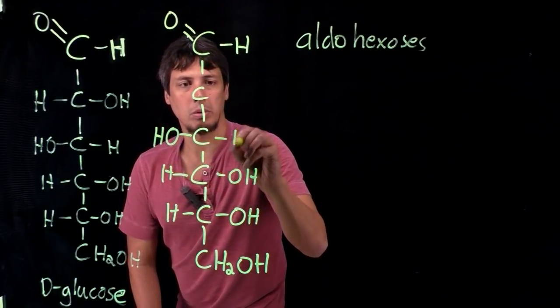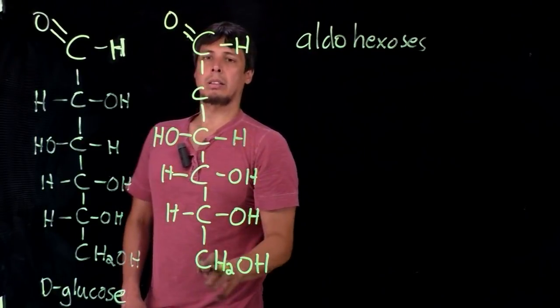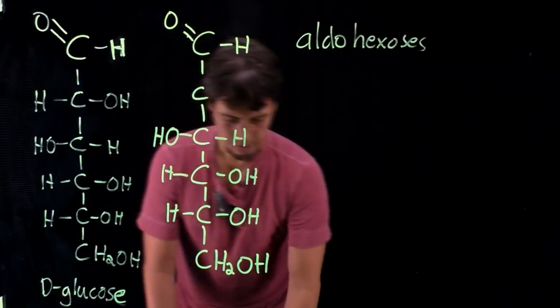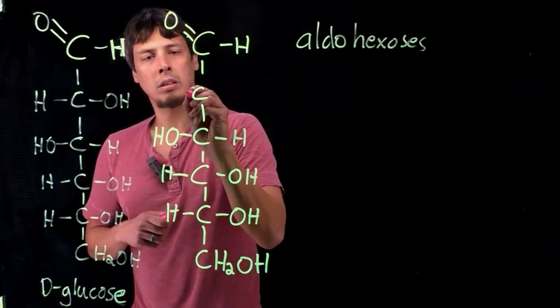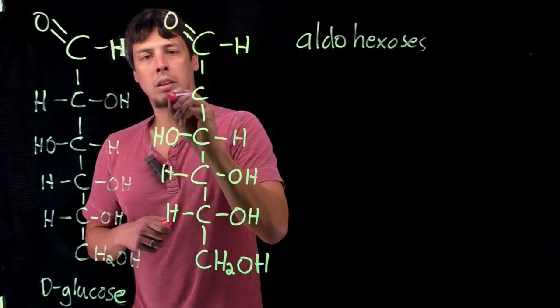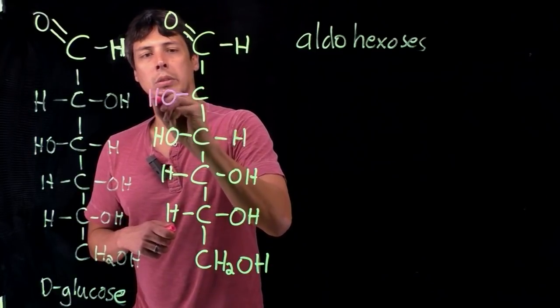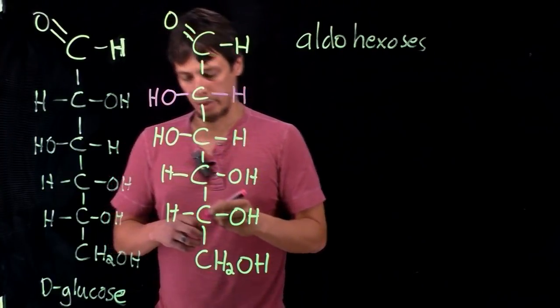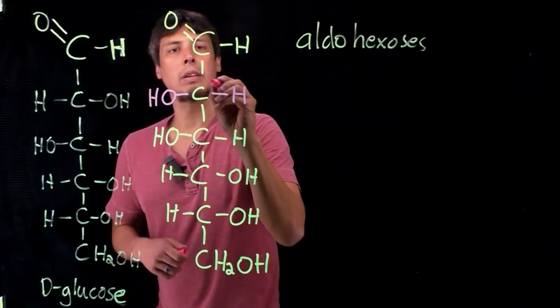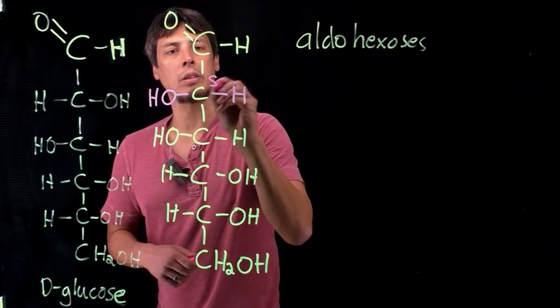So up to this point exactly like D-glucose except at this two carbon OH is going to be pointing in the other direction. So instead of an R stereochemistry, this carbon is going to have an S stereochemistry.